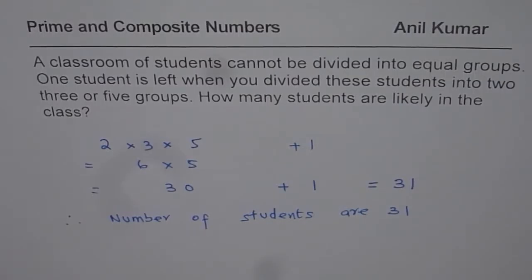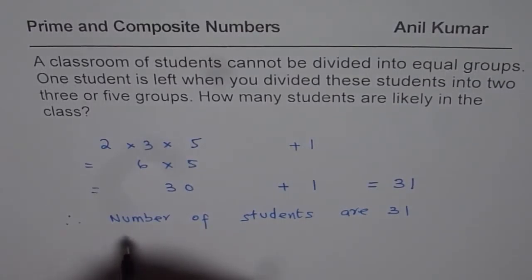So that is how you can solve it. If you have thirty-one students and you divide into two groups, what do you get? Maximum equal will be fifteen and fifteen plus one.